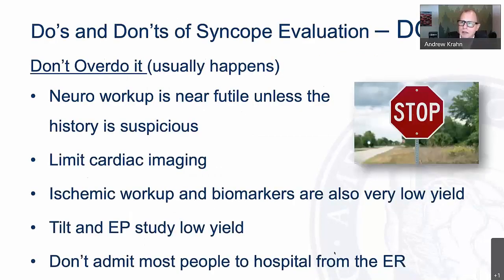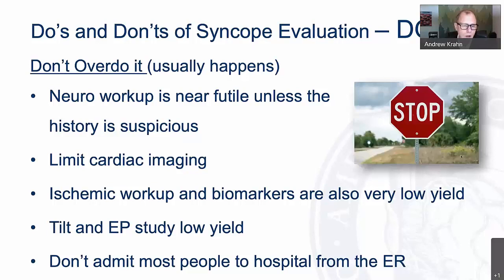In the don'ts: when evaluating syncope, we tend to invest less time in history and much more in diagnostic testing, yet the yield of many frequently used tests is very low. For example, neurologic workup — particularly carotid dopplers and imaging — has a very low yield. Even the EEG, which addresses the meaningful differential diagnosis of transient loss of consciousness, has a low yield.